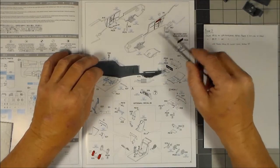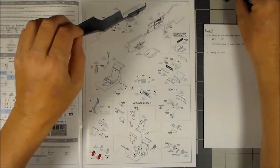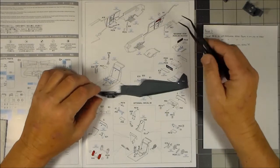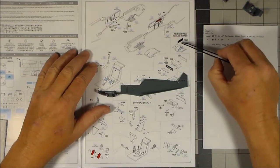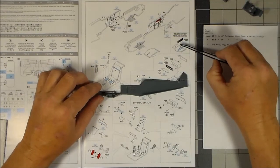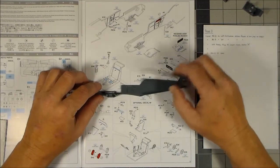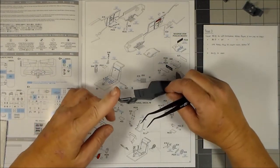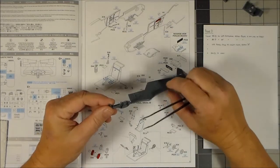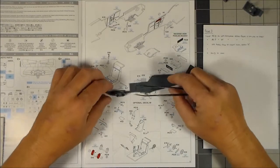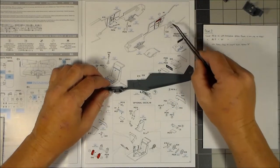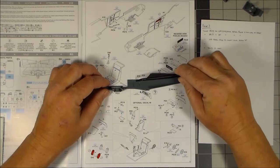This side of the fuselage, same thing. I assembled this part right here which I believe is a radiator intake. That was installed so I can paint the detail parts after I paint the base color.